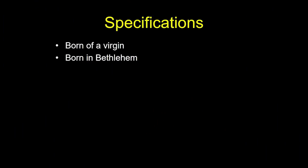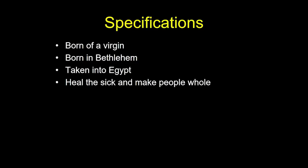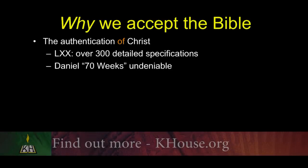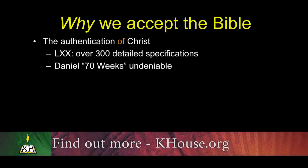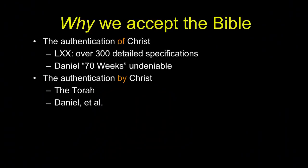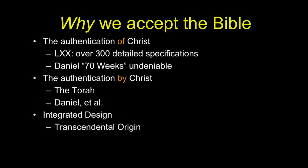All of this is detailed in our briefing package called 'How We Got Our Bible.' The main point is these specifications in the Bible have been fulfilled. The Bible says He would be born of a virgin, and He was. That He would be born in Bethlehem, and He was. That He would be taken into Egypt, and He was. That He would heal the sick, and He did. He would be crucified, and He was. He would die for our sins, and He did. He would be raised from the dead, and He was. We accept the Bible not because of these little numbers from Panin — no. We do this because it's the authentication of Jesus Christ. The Septuagint has over 300 detailed specifications He fulfilled in His lifetime, and the 70 weeks prophecy in Daniel chapter 9 is undeniable.